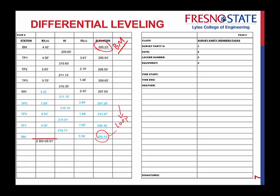Let's double-check our math. We ended up at minus 0.08. If you take 205.15 minus what we started, that's 0.08. That misclosure means we didn't end at the exact same elevation. Taking our ending elevation and subtracting our initial elevation, we end up at minus 0.08.